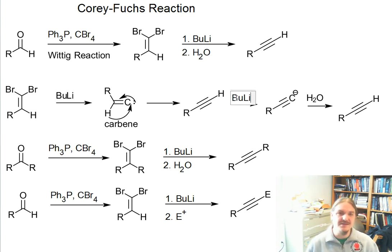And as I discussed in the video on the acidity of alkynes, butyllithium is a strong enough base to deprotonate this alkyne as it forms. And so actually the acetylide anion forms, and then we need aqueous workup to recover the terminal alkyne.